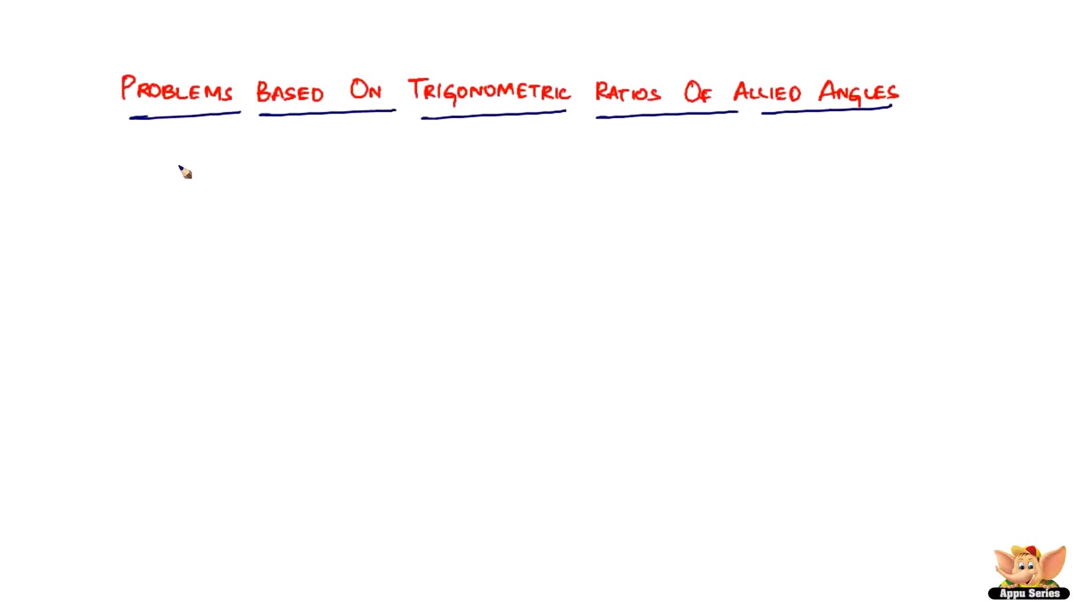In this video let us continue to solve problems based on trigonometric ratios of allied angles. So here we've got a problem which says find the values of, well, find the values of a lot of problems yet to come, but let's start off with this one: cos of minus 480 degrees.